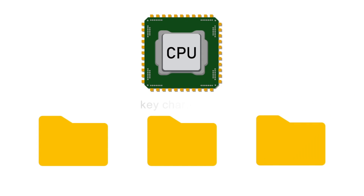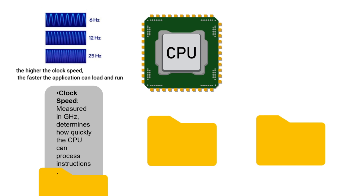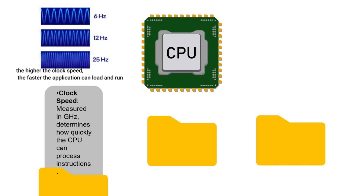There are three key characteristics that we should take note about the CPU. First, we have the clock speed. This is measured in gigahertz, and it determines how quickly the CPU can process instructions. The higher the clock speed, the quicker it can process instructions, so a faster clock speed means applications can load and run faster.